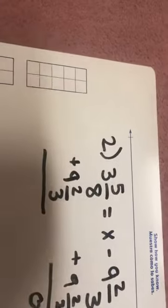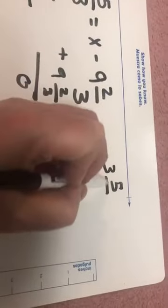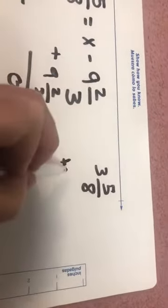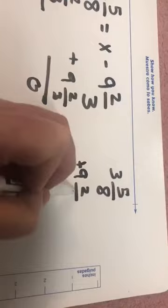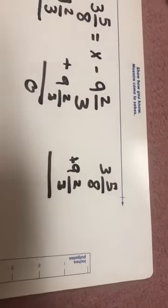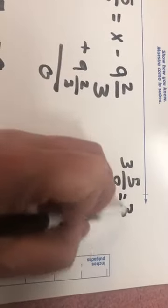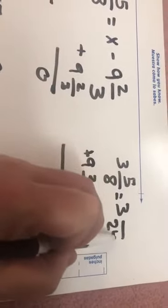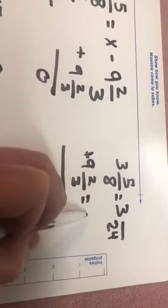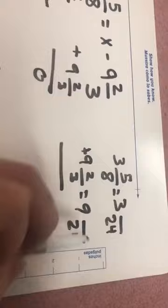I'm going to find my common denominator. When I think about 8 and 3, I think about 24. So I'm actually going to come over here and give myself a little more space. 3 and 5 eighths plus 9 and 2 thirds. When I think about 8 and 3, my common denominator, I believe, is going to be 24. That's going to be the best number to use. So this is going to become 3 and something over 24. This is going to become 9 and something over 24.